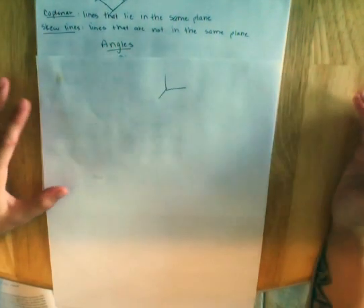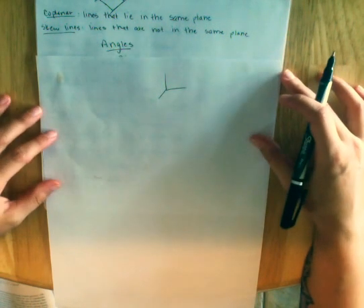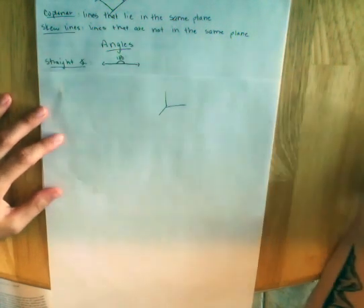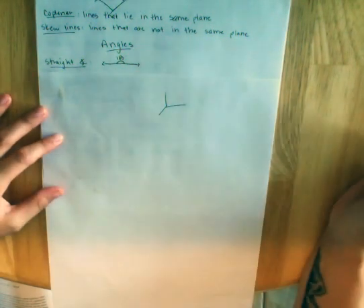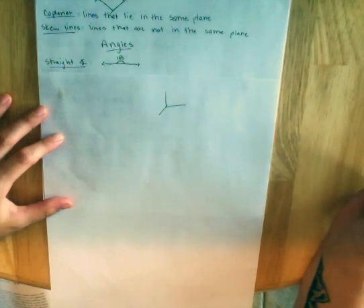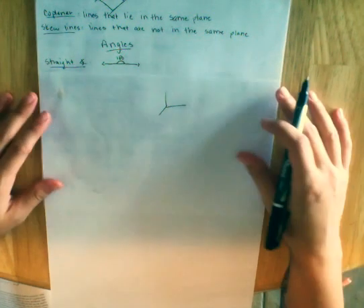The next section we have, we are going to talk about angles. This should be reviewed from Algebra 2. I hope you remember it. Straight angle looks exactly like this. It is 180 degrees. We talked a lot about straight angles with transversals, which we will get to later.